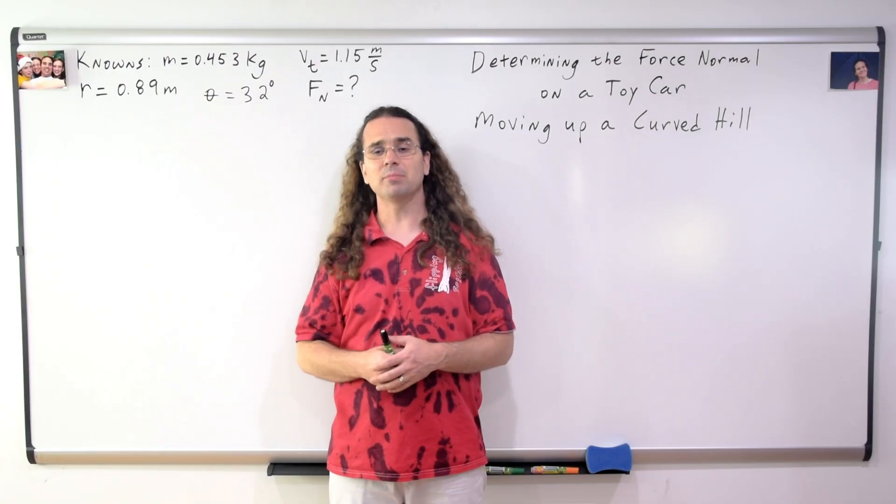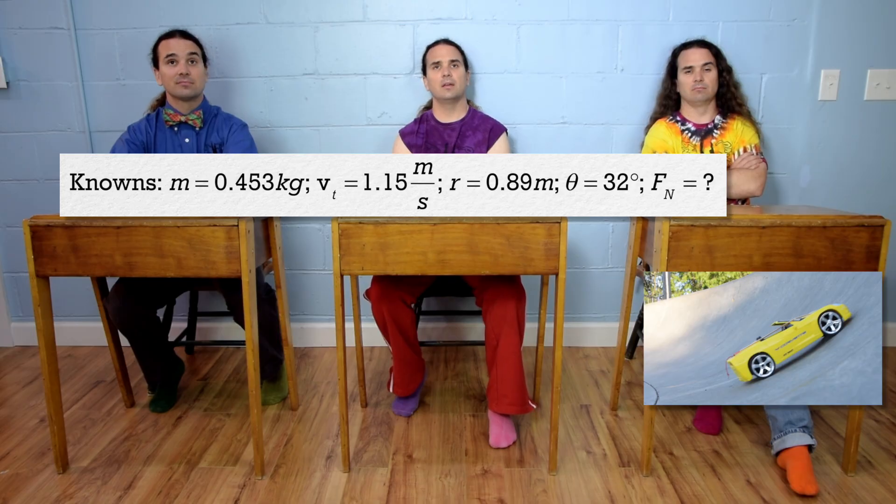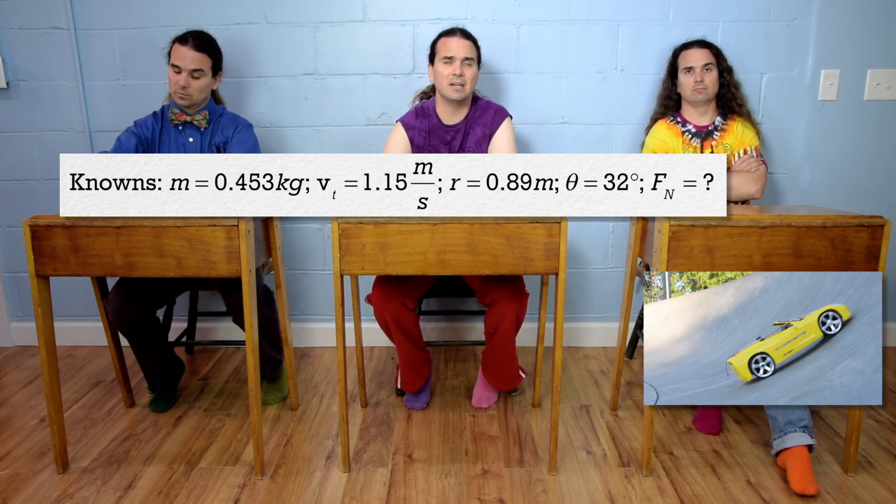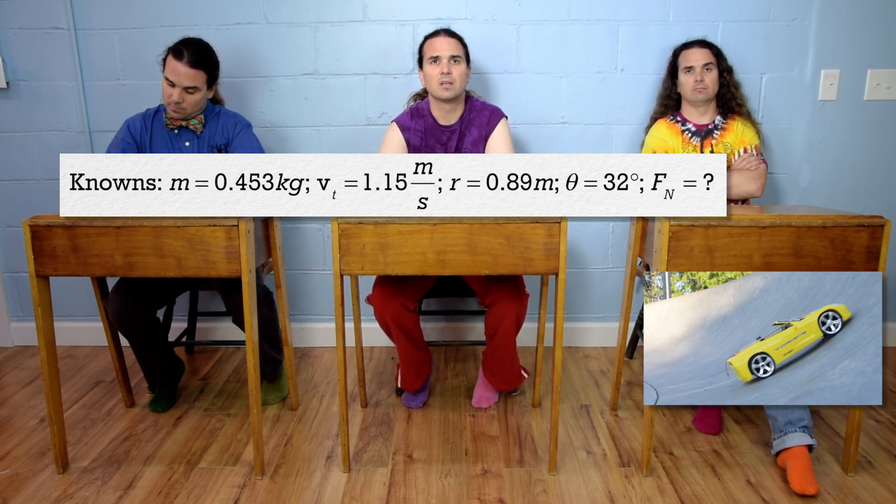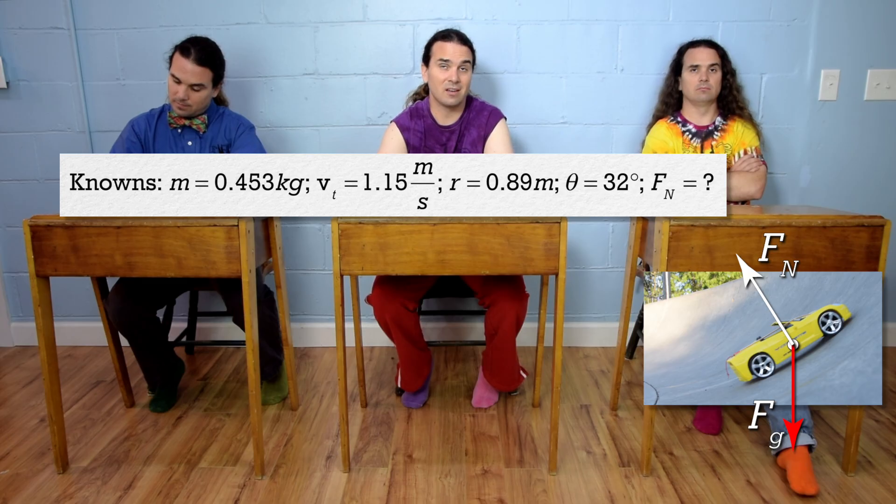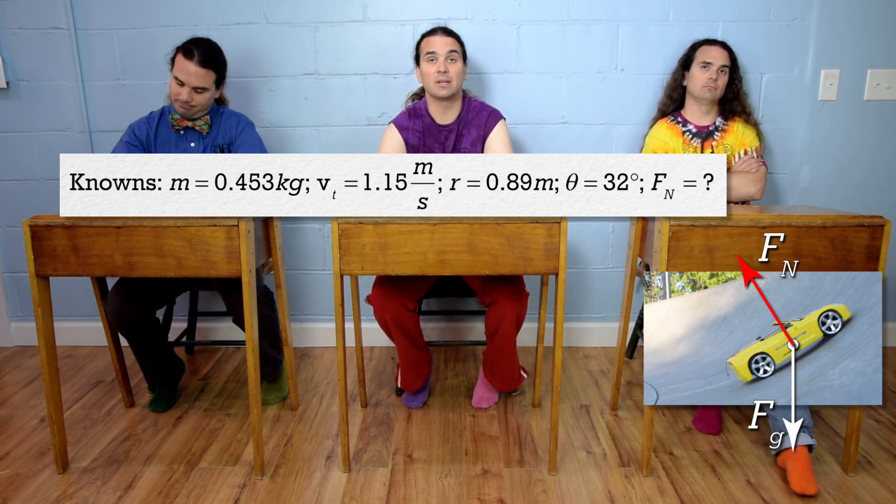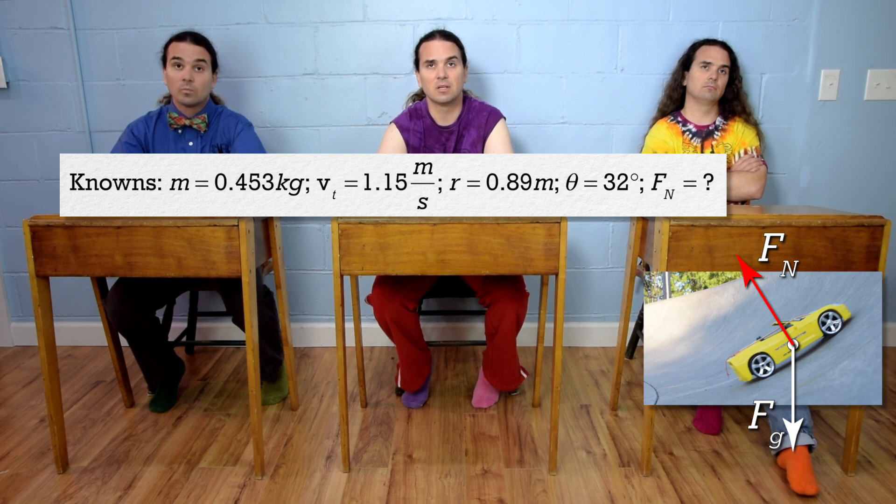Nice. Okay, Bobby, please start the problem. Yeah. Let's draw a free body diagram. The force of gravity is straight down and the force normal is up and perpendicular to the hill. That's it.